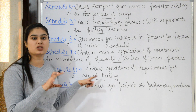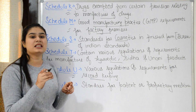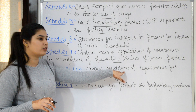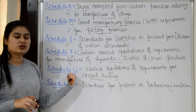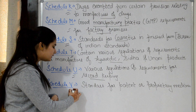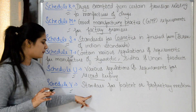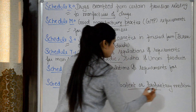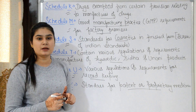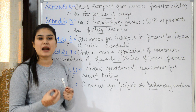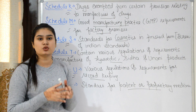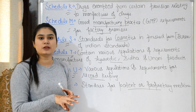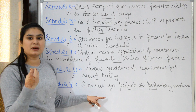Schedule U contains various regulations and requirements for record keeping. After manufacturing any drug or cosmetic, records must be maintained for at least 5 years — these rules and regulations are in Schedule U. Schedule V covers standards for patent and proprietary medicines — these are brand or trade medicines made by a company, often with copyright, and the standards for these are in Schedule V.